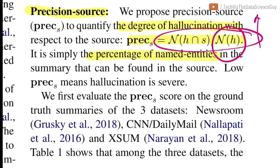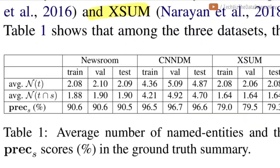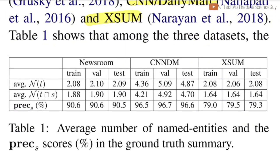The first experiment was on three established datasets: Newsroom, CNN/Daily Mail, and XSum. For all three datasets, when comparing ground truth summaries against the source document, the precision percentage was around 90% for Newsroom — meaning almost 10% of the training, validation, and test data was already hallucinated. It was more severe for XSum with numbers around 79%, 79.5%, and 79.3%, meaning close to 20% hallucination rate in the actual ground truth dataset. They hypothesized that because the dataset itself is already hallucinated, that could be one reason the model learns those patterns.